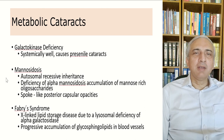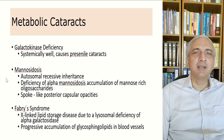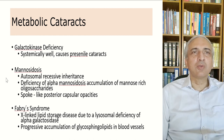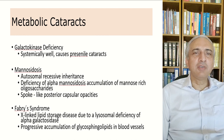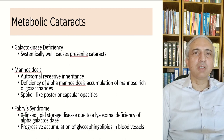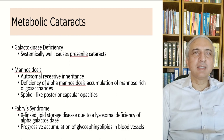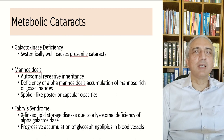Metabolic cataracts arise from diseases such as galactokinase deficiency, which causes pre-senile cataracts in a systemically unwell patient. Mannosidosis is an autosomal recessive condition with deficiency of alpha-mannosidase and accumulation of mannose-rich oligosaccharides, producing spoke-like posterior capsular opacities. Fabry's disease is an X-linked lipid storage disease due to lysosomal deficiency of alpha-galactosidase A, causing progressive accumulation of glycosphingolipids in blood vessels.